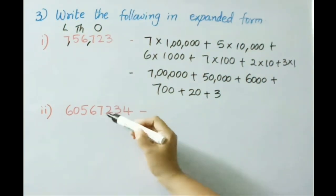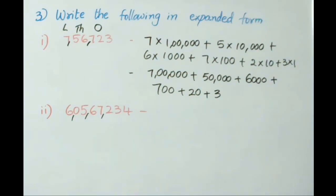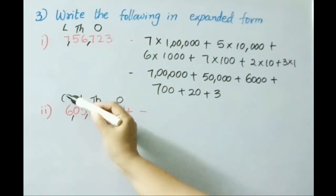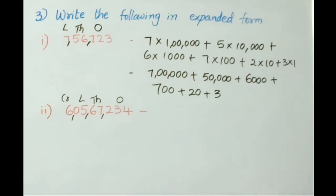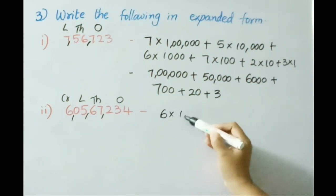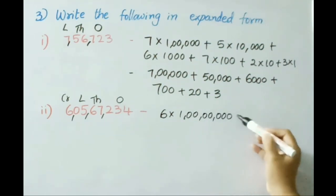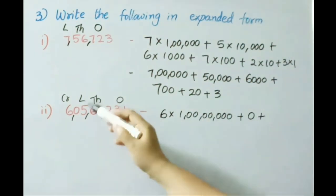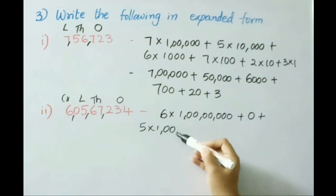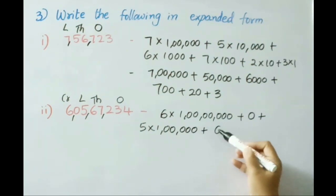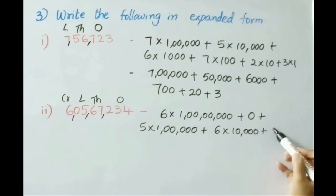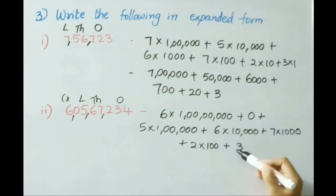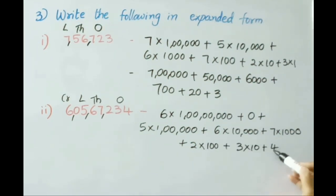See the second one now. First 3 digits, then 2 and 2 digits separated by commas. Periods: ones period, thousands, lakhs, and crores. Let us write the expanded form: 6 × 1 crore + 0 × 10 lakhs + 5 × 1 lakh + 6 × 10,000 + 7 × 1,000 + 2 × 100 + 3 × 10 + 4 × 1.